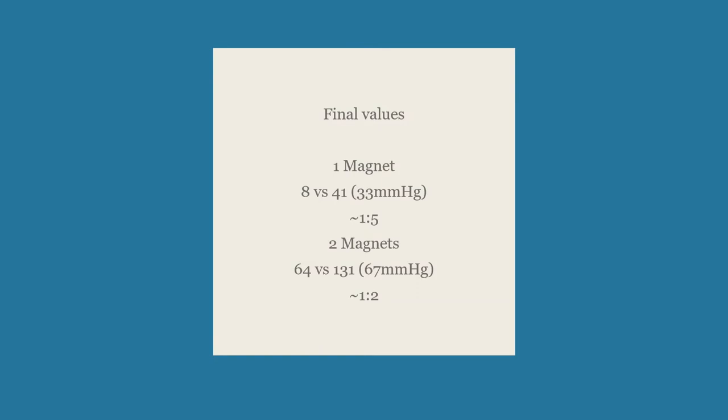So for our final values, our pressure differential for one magnet is 33 millimeters of mercury and for two magnets it's 67 millimeters of mercury. What's interesting though is the difference between the ratios of one magnet versus two magnets. For one we get a 1 to 5 ratio and for two we get only 1 to 2.